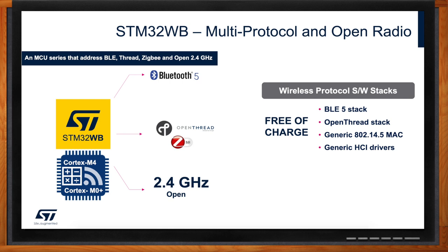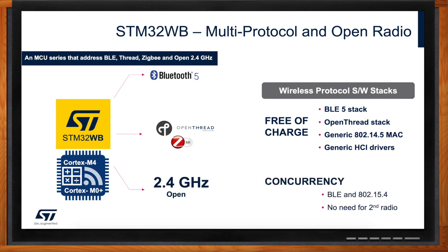The STM32WB is a system-on-chip, so on the same die you have the application controller, the software stacks, and the radio all running under one hood. The software stacks are provided free of charge, already included out of the box. An added feature is that the STM32WB supports concurrency between protocols — so you can imagine a single device talking Bluetooth on one side and Zigbee on the other, bridging those different protocol silos that don't communicate today.